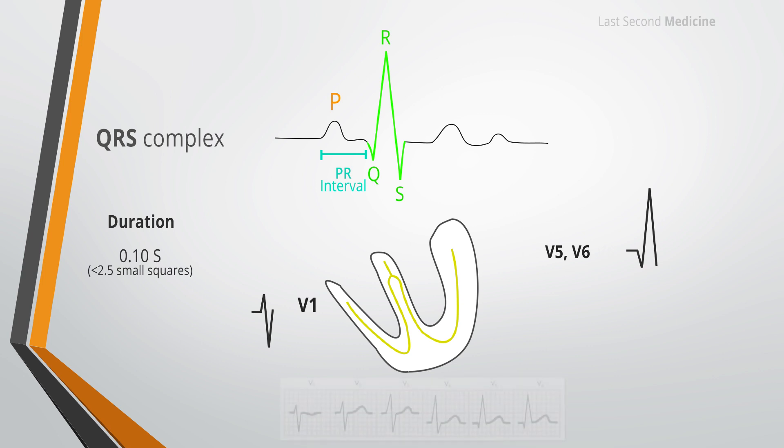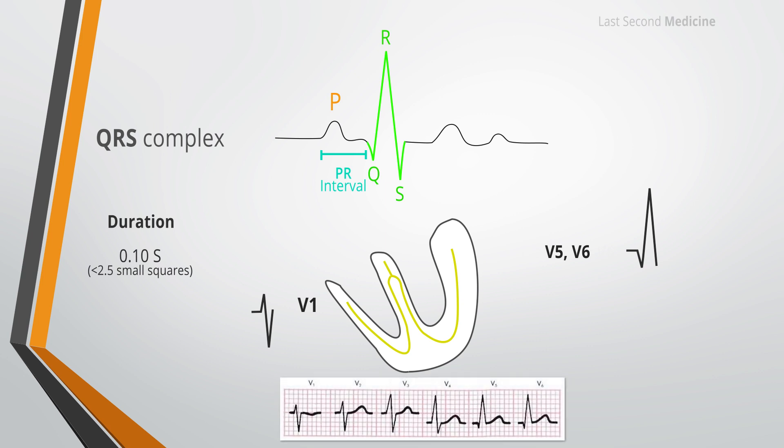The R wave in the precordial leads steadily increases in amplitude from lead V1 to V6 with a corresponding decrease in S wave depth. Thus, the QRS complex gradually changes from being predominantly negative in lead V1 to being predominantly positive in lead V6. An equiphasic QRS complex is located over the transition zone which is V3 and V4, but this transition zone shifts towards the left with age.